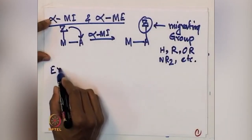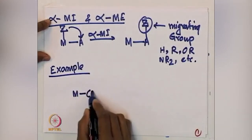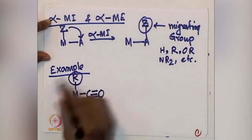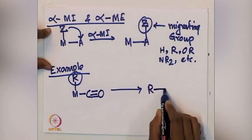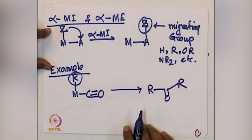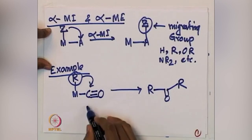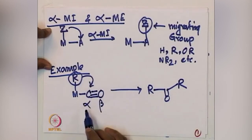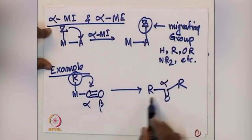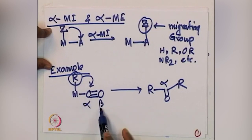Let us take one example. If you have a metal carbonyl species with an R group — let us say R is an alkyl group — you are familiar with the M-C(O)R bond formation. Technically, R is migrating onto the carbonyl. This is the alpha position and this is the beta position. Since R is migrating selectively at the alpha position, this is called alpha migratory insertion. Beta migratory insertion occurs when the R group migrates at the beta position.